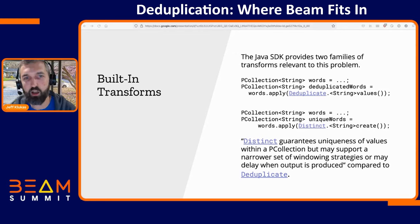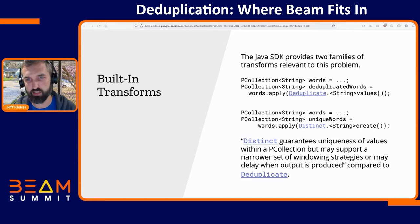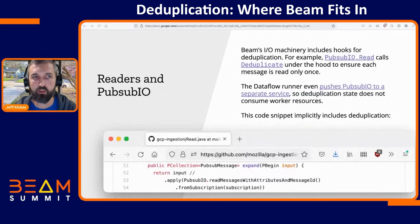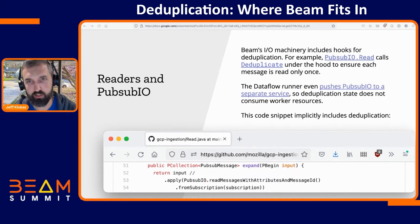The big thing is how these are implemented differently. Distinct relies on Beam's windowing behavior — it takes whole windows of messages and ensures only one copy of each message makes it out of the window. Deduplicate, on the other hand, uses Beam state: it keeps a set of keys or messages that have been seen and checks as new things come in, so it doesn't necessarily have to rely on windowing at all.